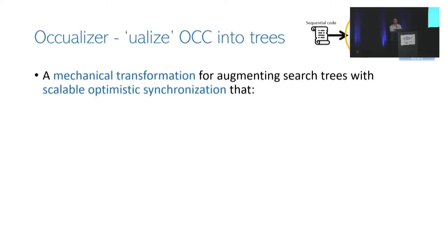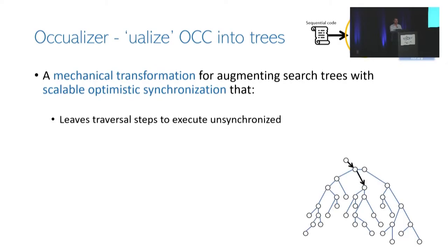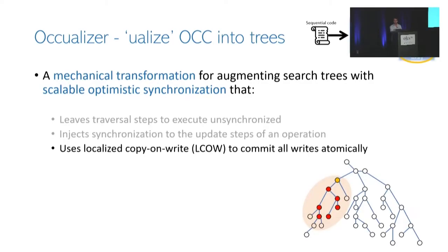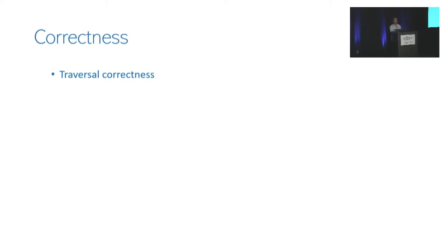In OCCUalyzer, we make sure that in the output trees, all traversal steps of any operation remain unsynchronized, guaranteeing the optimistic concurrency control property is satisfied. The only steps to which synchronization is injected are the updating steps. These injected synchronization calls implement a protocol called localized copy-on-write, which performs all tree modifications in one atomic step. While unsynchronized traversals are highly scalable, they have a problem: it's not clear such traversals are correct.